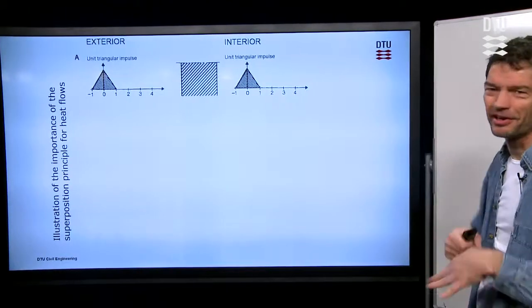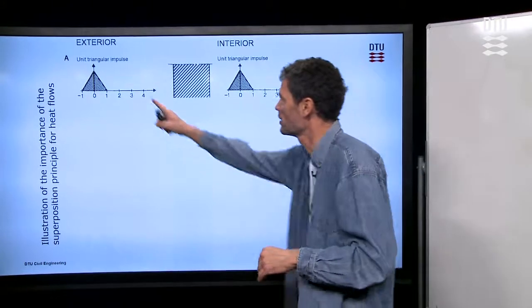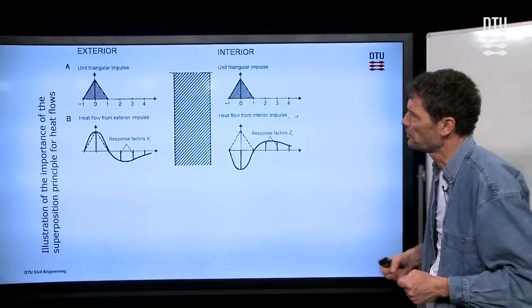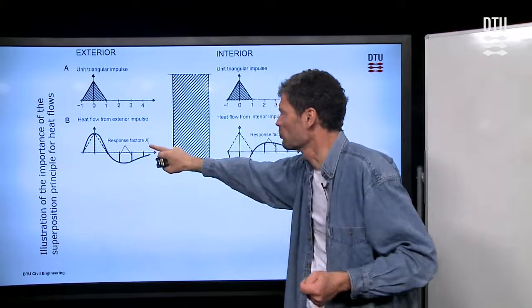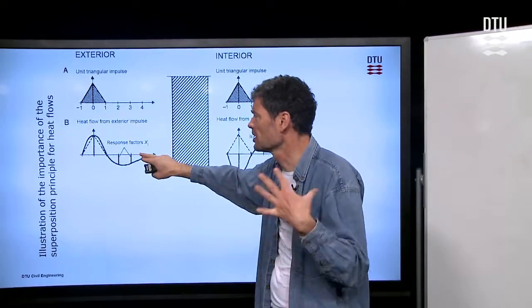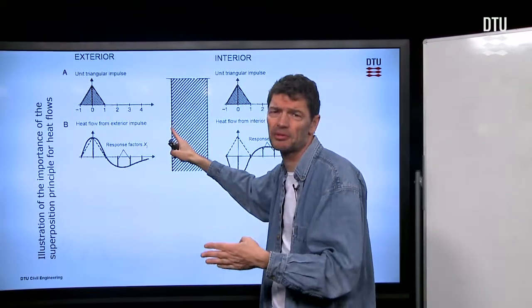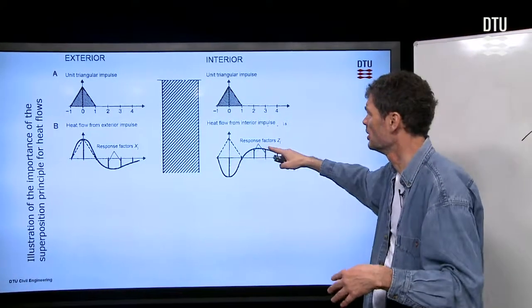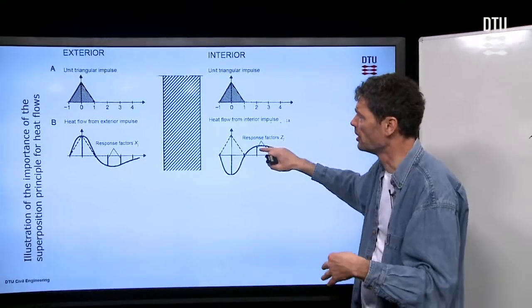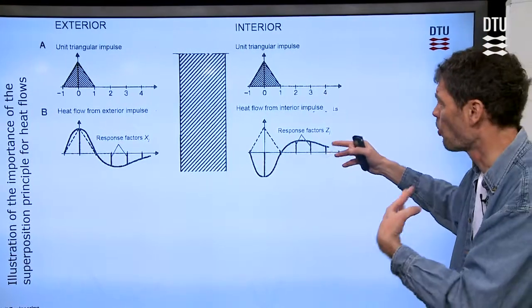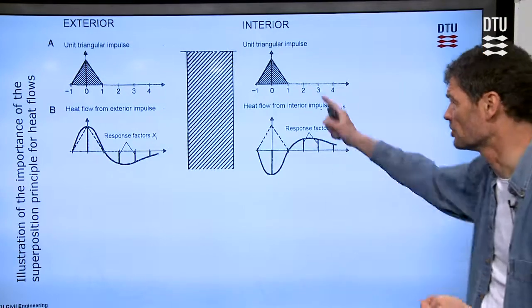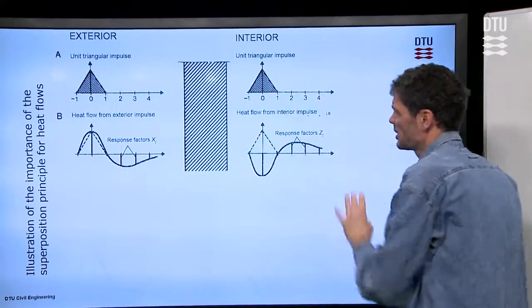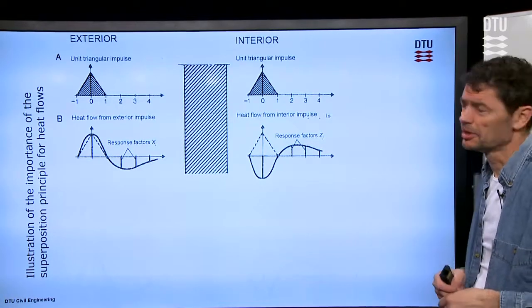So now let's look to the whole methodology of calculating this. So we work with these triangular impulses. Let's assume that we could have one coming from each of the sides of the wall. And if we look to the first impulse that came on the left hand side, then we have some response factors. And the X factor tells us what is the heat flow coming into the left hand side of the wall as a result of the temperature impulse on the left hand side. We have also a response factor on the opposite side. So the Z factor is the response factor for the temperature on the right hand side.